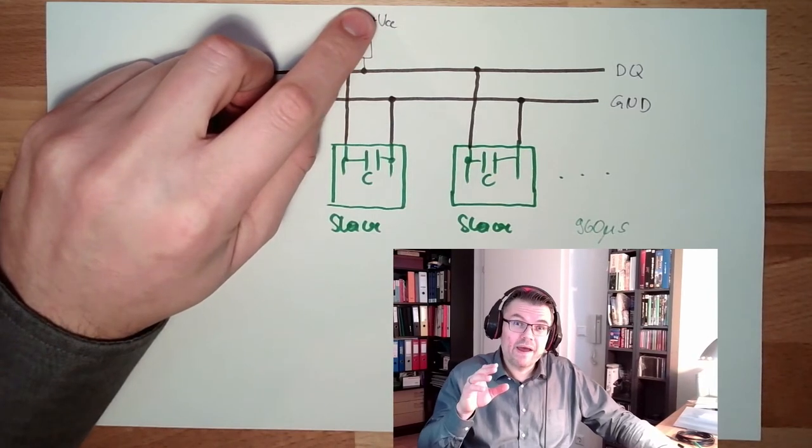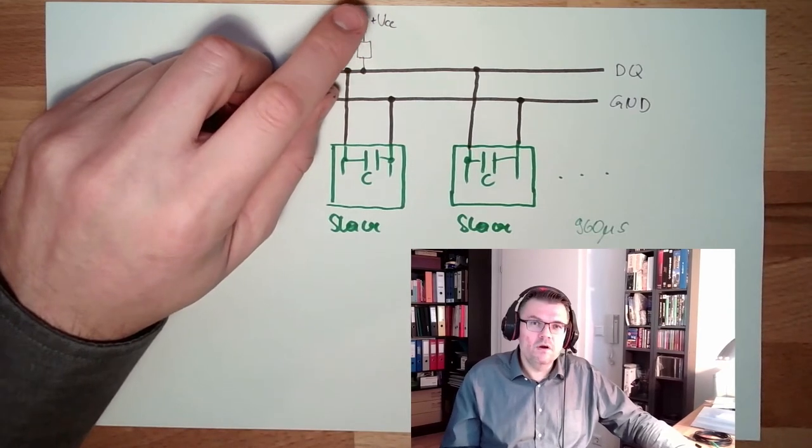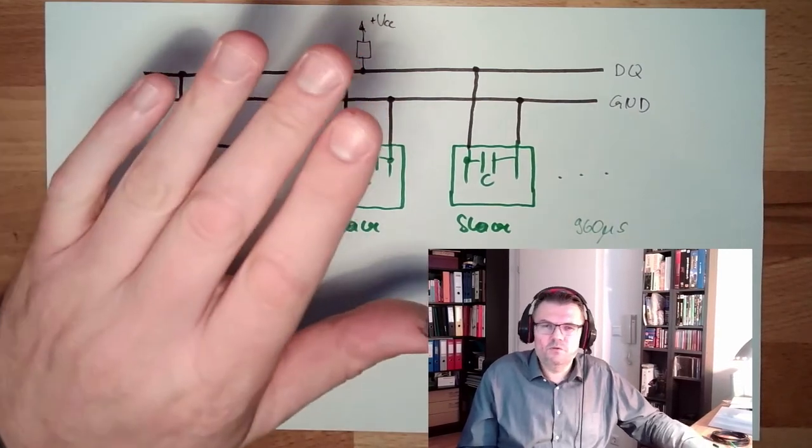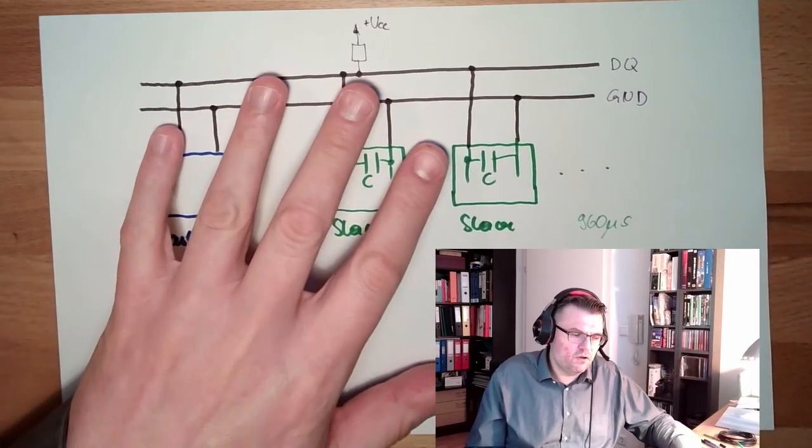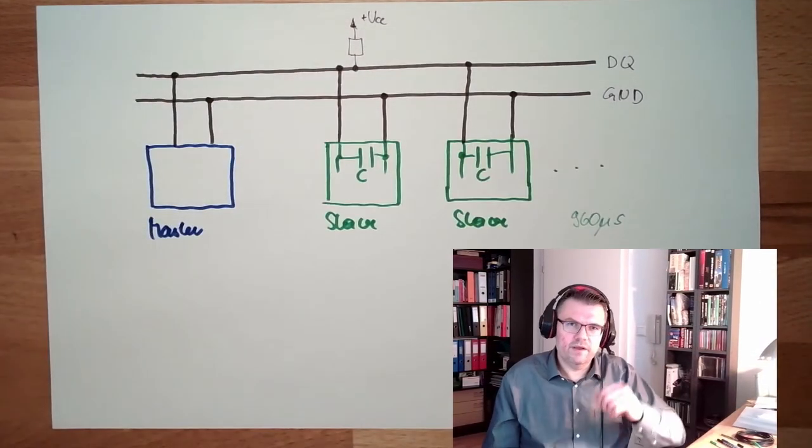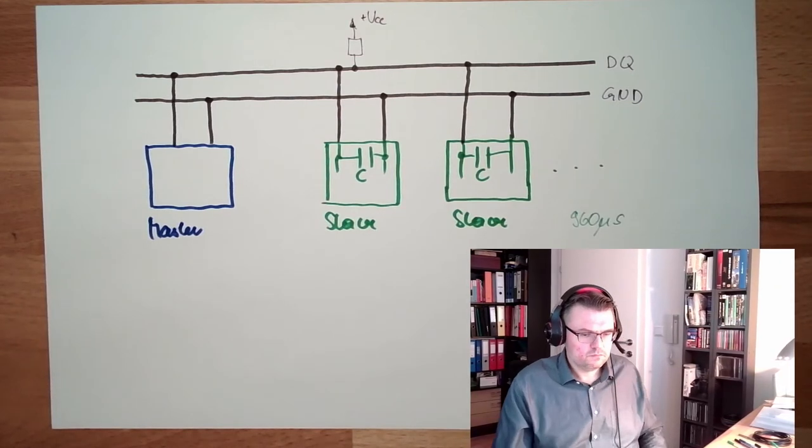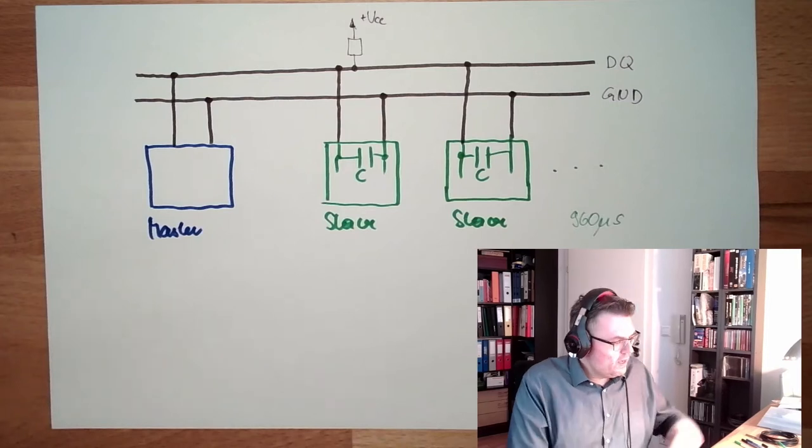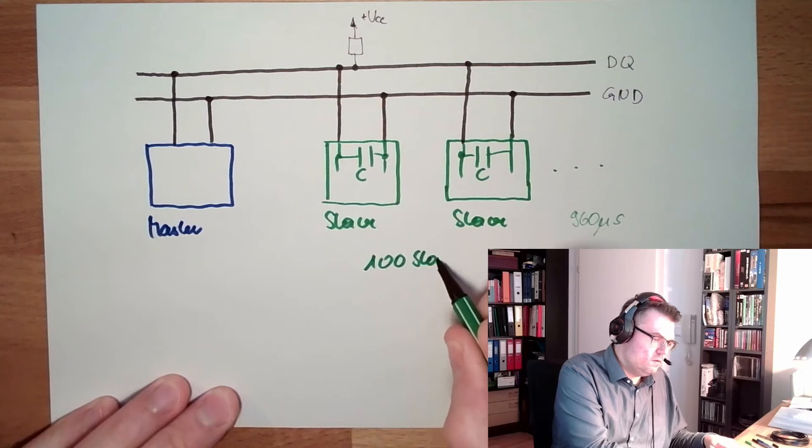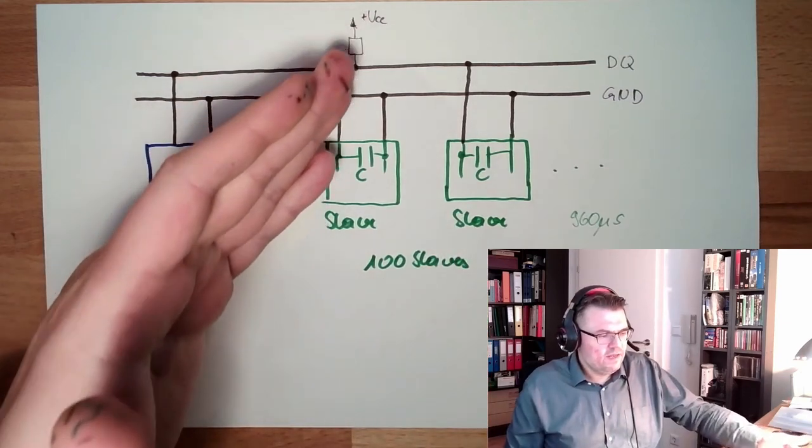Some one-wire elements only allow 3.6 volt. You have to refer to the data sheet, please refer, because you're destroying it. Up to six volt, some tolerate up to six volt. Five volt is quite usual. And some only tolerate 3.8 or something like this. You have to look.